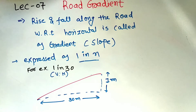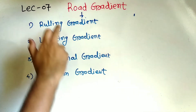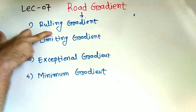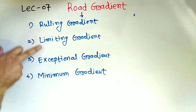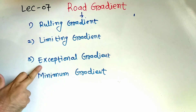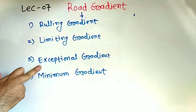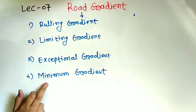Now the most important thing that can be asked in the examination is the types of the road gradient. The first is the ruling gradient, second is the limiting gradient, third is the exceptional gradient, and fourth is the minimum gradient.